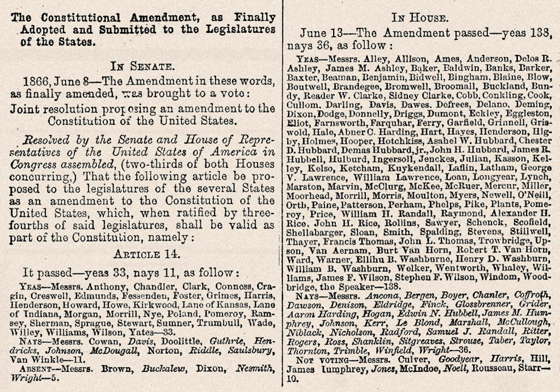Section 2. Representatives shall be apportioned among the several states according to their respective numbers, counting the whole number of persons in each state, excluding Indians not taxed. But when the right to vote at any election for the choice of electors for president and vice-president of the United States, representatives in Congress, the executive and judicial officers of a state, or the members of the legislature thereof, is denied to any of the male inhabitants of such state, being twenty-one years of age, and citizens of the United States, or in any way abridged, except for participation in rebellion, or other crime, the basis of representation therein shall be reduced in the proportion which the number of such male citizens shall bear to the whole number of male citizens twenty-one years of age in such state.